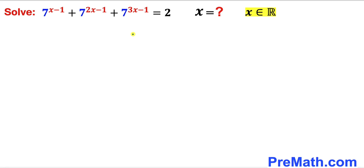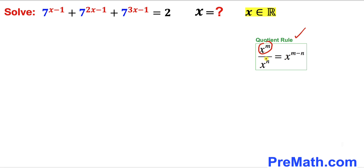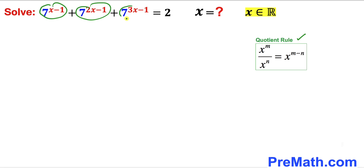Let's go ahead and get started. Here's our very first step: let's recall the quotient rule of exponents. If we have x^m divided by x^n, then we can write x^(m−n), and we are going to use this rule on all three terms on the left hand side.